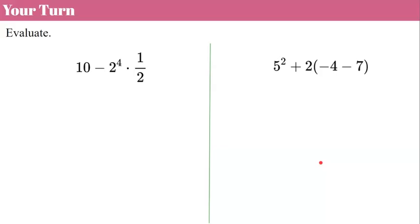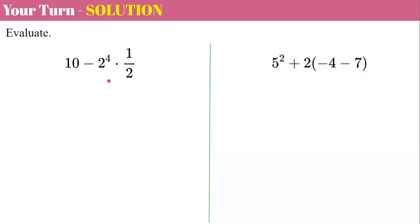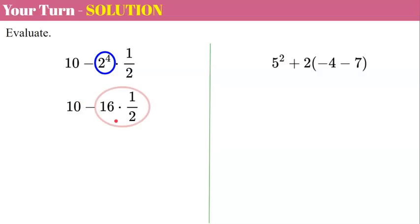Pause the video and use order of operations to evaluate these expressions. For the first one, we clear the exponent first: 2 to the 4th is 2×2=4, then 4×4=16. So we have 10 subtract 16 times one-half. Multiplying first: 16 times one-half is 8. Then 10 subtract 8 equals 2.